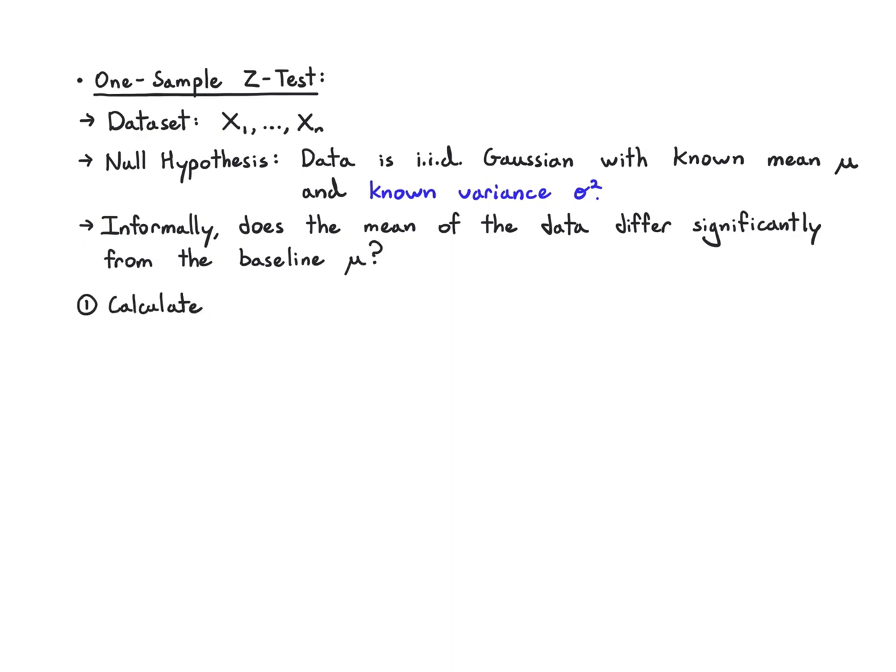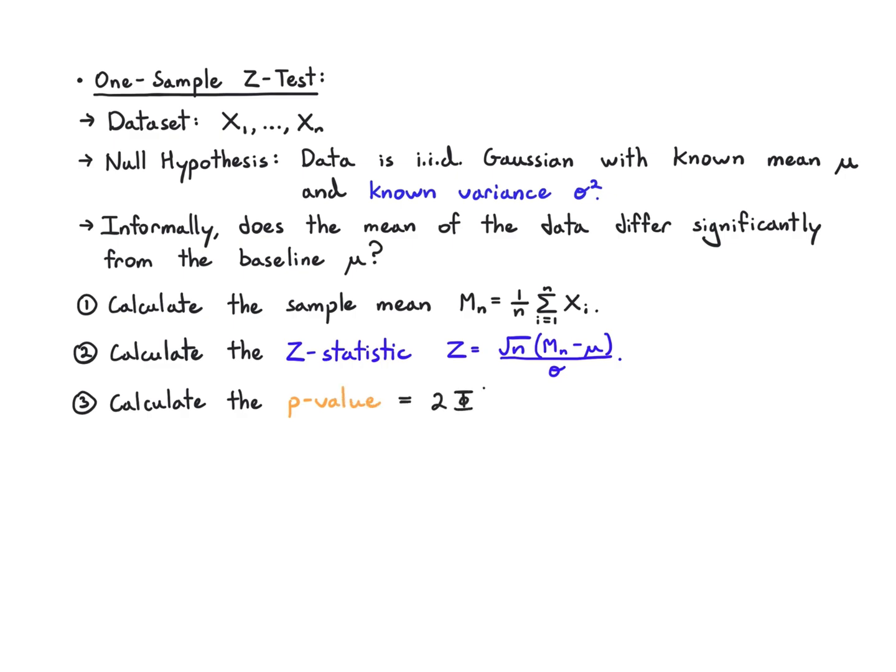The way that we do this is we calculate the sample mean. We just average the data. Then we calculate this thing called the z-statistic. It's root n times the sample mean minus its mean divided by the standard deviation. We calculate the p-value. The nice thing about this z-statistic is that it is Gaussian distributed if the data is Gaussian. I'm calculating the area that the null would have generated an observation at least as extreme as my own, which was z. I'm looking at minus absolute value of z and plus absolute value of z to get both the left side and the right side. Those are the two extremes I could have seen.